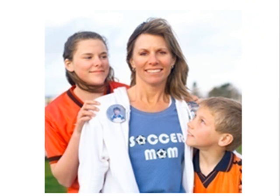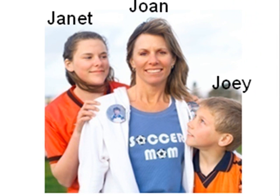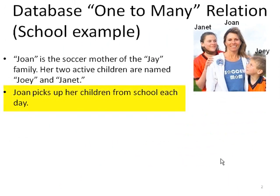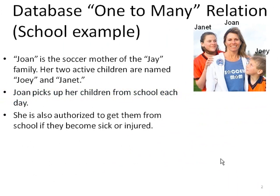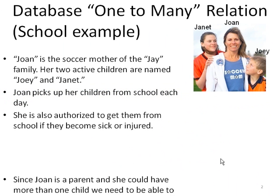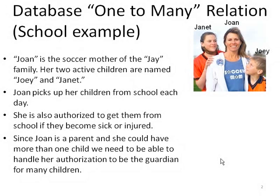Let's use a soccer mom example. This is Joan. Joan is the soccer mother of the Jay family. Her two active children are named Joey and Janet. Joan picks up her children from school each day and is also authorized to get them if they become sick or injured. Since Joan is a parent and she could have more than one child, we need to be able to handle her authorization to be the guardian for multiple children.